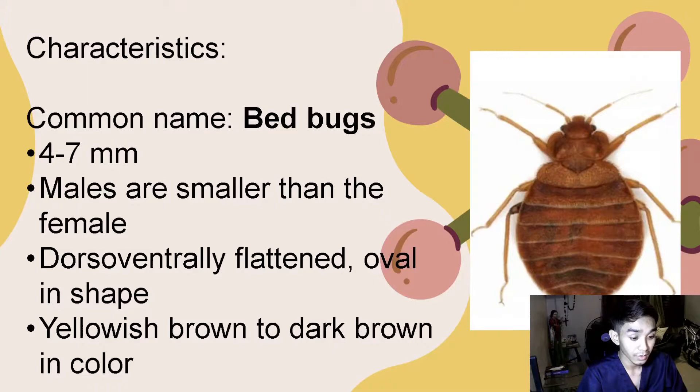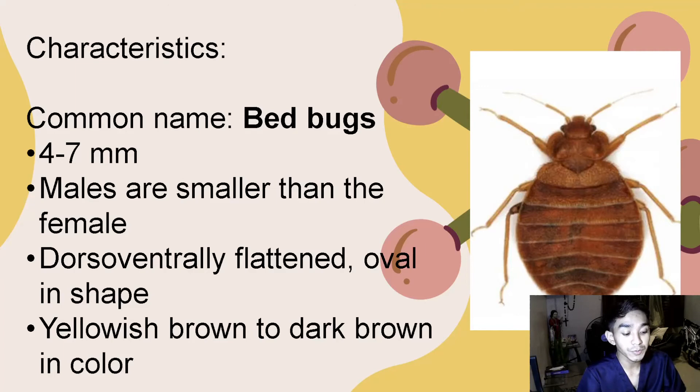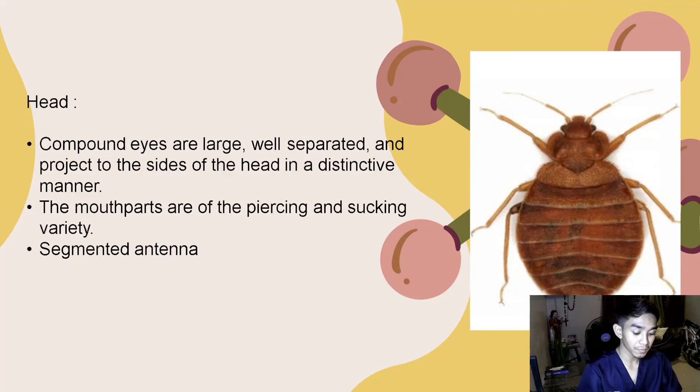So bedbugs — characteristics of bedbugs. Common name: bedbugs. They are 4 to 7 mm. As mentioned earlier, female bedbugs are larger than the male bedbugs. They are ventrally flattened and oval in shape. They are yellowish-brown to dark brown in color.